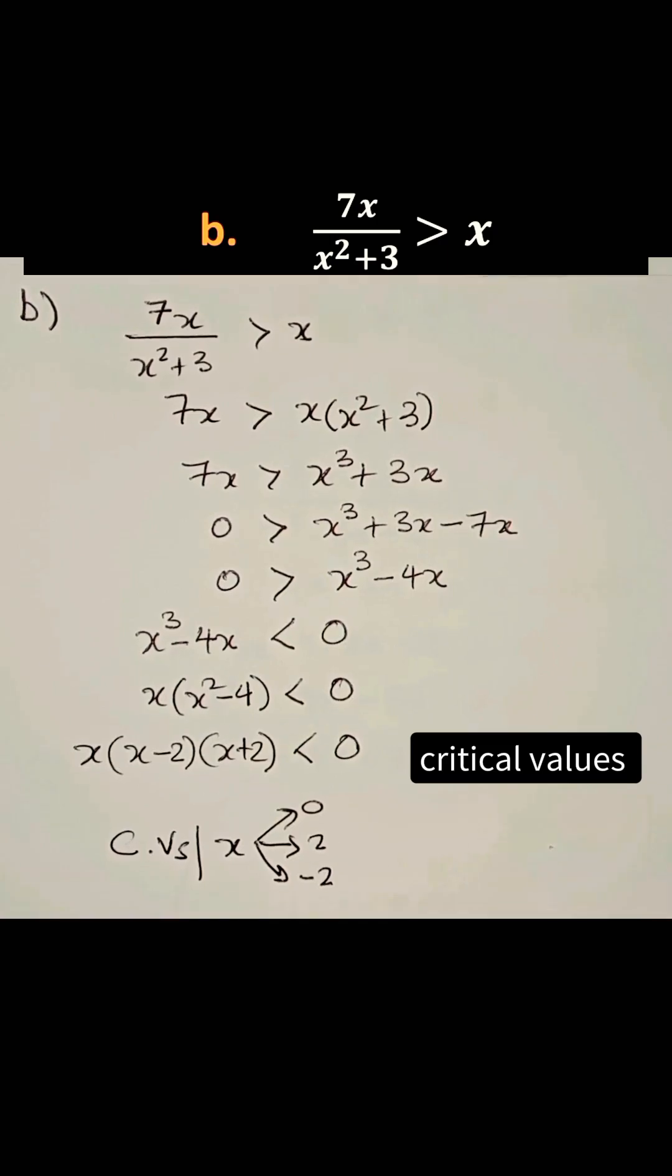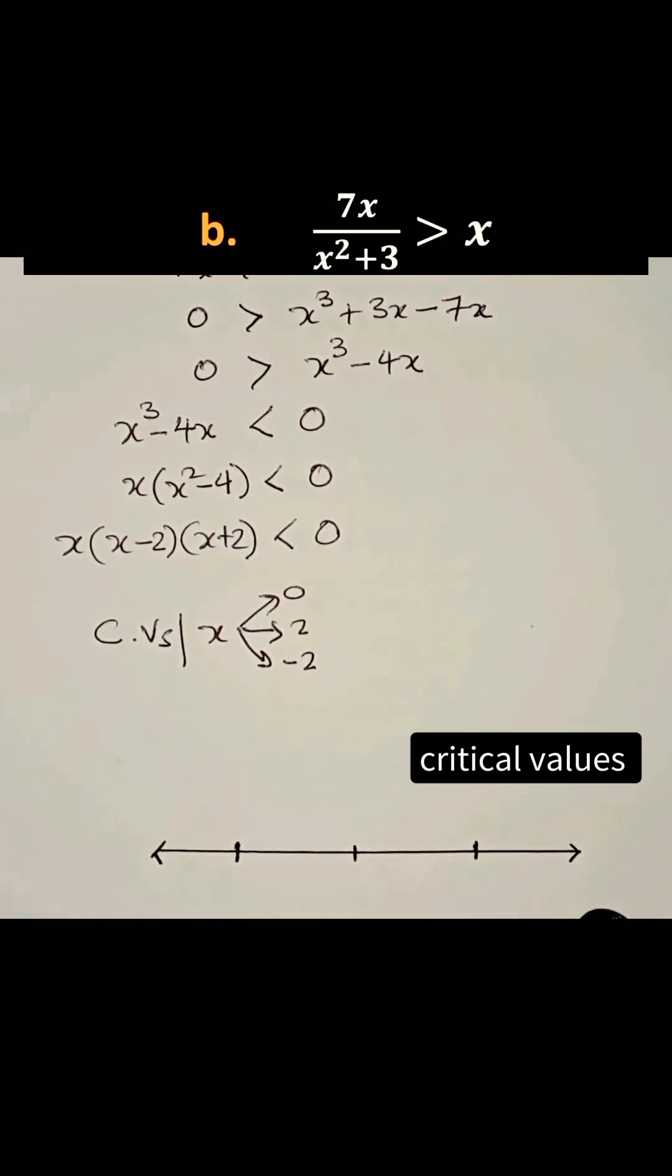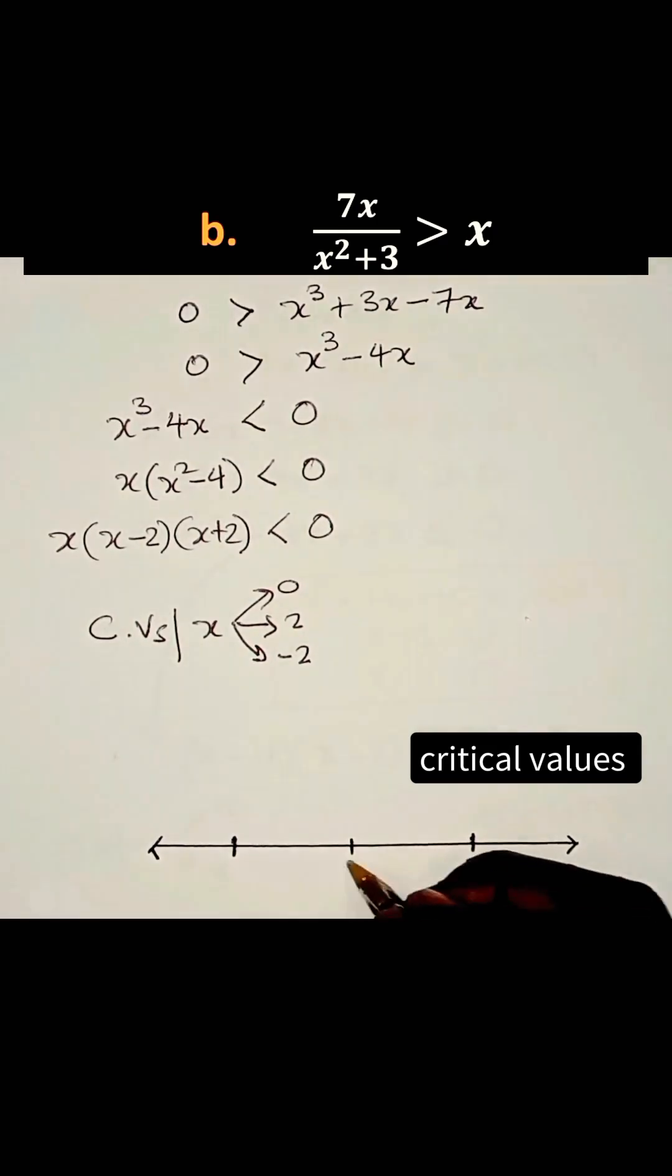Now down there is a number line that I have already sketched. We have the critical values at 0, -2, and 2.